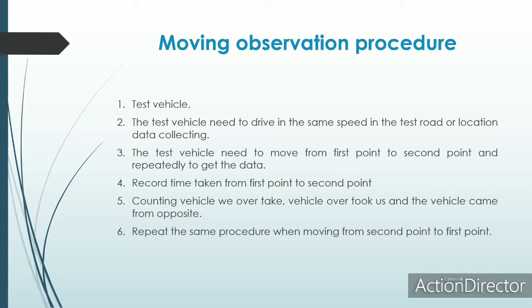First, we need a test vehicle. Second, the test vehicle needs to drive at the same speed along the test route or data collection location. Third, the test vehicle needs to move from the first point to the second point, and the time taken needs to be recorded. We divided vehicle counting into three categories: vehicles we overtake, vehicles that overtake us, and vehicles coming from the opposite direction. For the return trip from the second point to the first point, we repeat the same procedure.